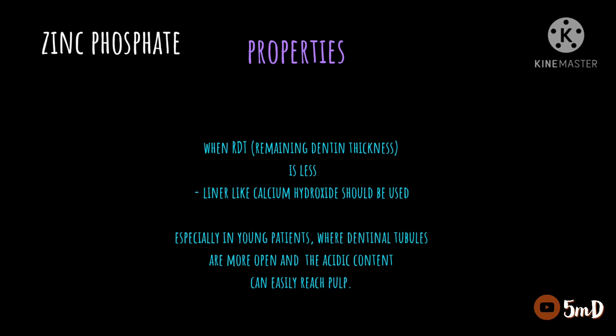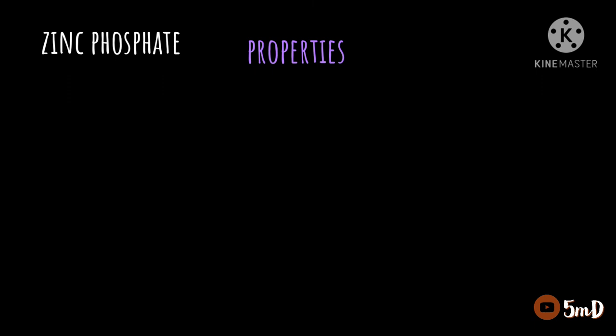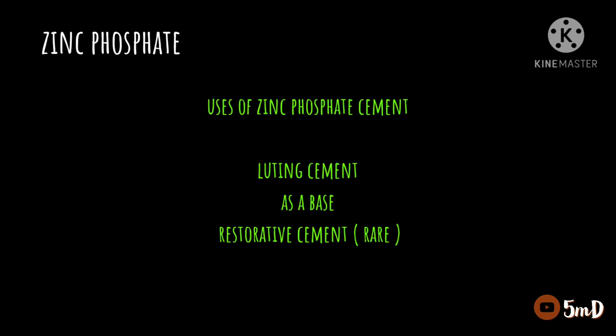Finally, the uses of zinc phosphate cement: it was commonly used as a luting cement and can also be used as a base and sometimes as a restorative material. However, in recent days there are many better alternatives to zinc phosphate cement, which has reduced its use. Thus we have seen about zinc phosphate cement — see you in the next video.